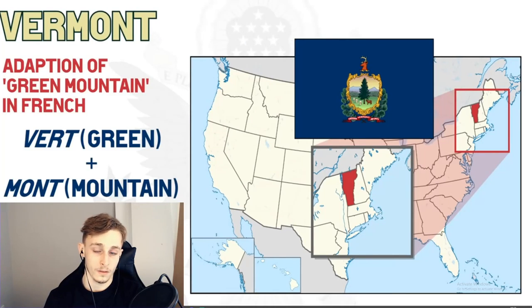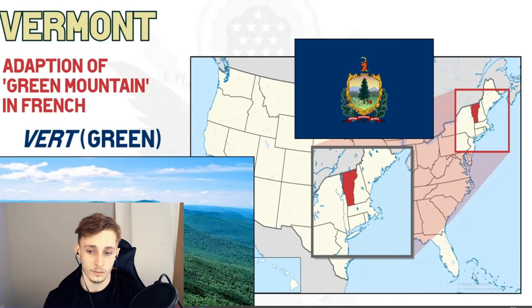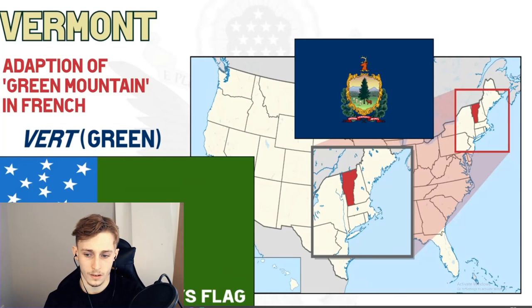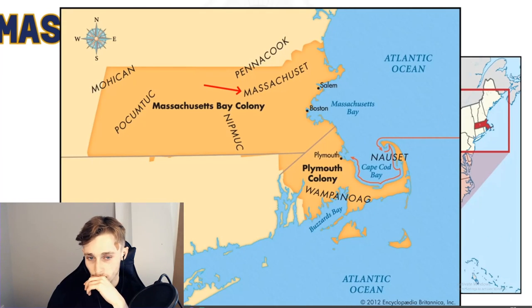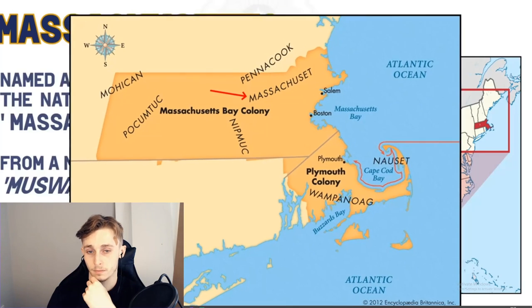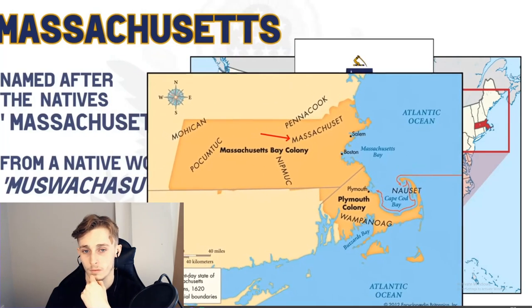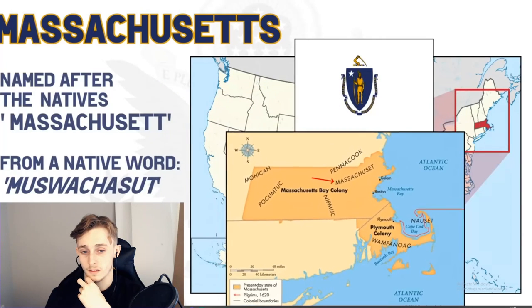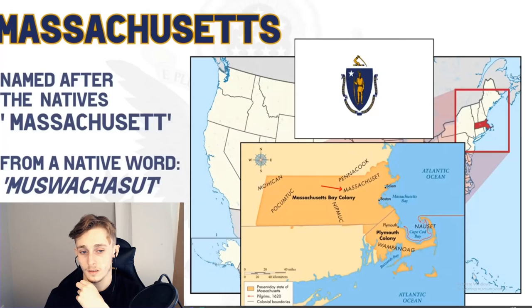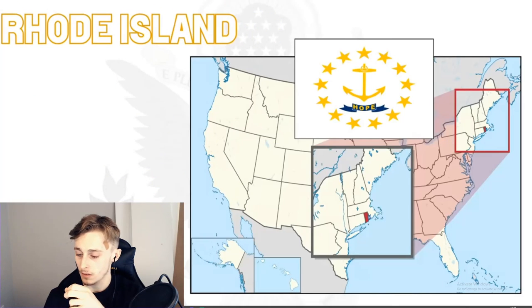Vermont's name comes from the combination of two French words: 'vert' and 'mont' — 'green mountain.' 'Vert' means green and 'mont' means mountain or mount, likely because of the Green Mountains that characterize the state. The short-lived independent Vermont Republic even used the Green Mountain Boys flag as its ensign. Massachusetts takes us back to native origins — the Massachusetts Bay Colony was named after the indigenous population, whose name likely came from the native word 'massa-adchu-s-et,' directly translating to 'big mountain.'